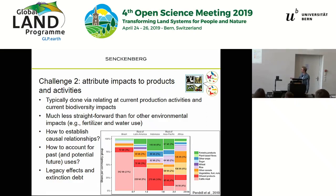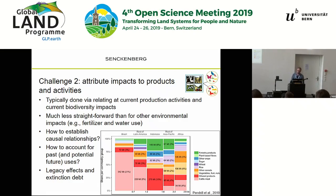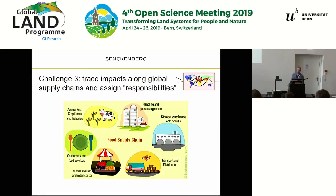In Brazil, most deforestation is attributed to beef production; in Indonesia, to palm oil production. The goal is to link overall impacts — biodiversity change, deforestation — to individual products and processes, and then to supply chains.